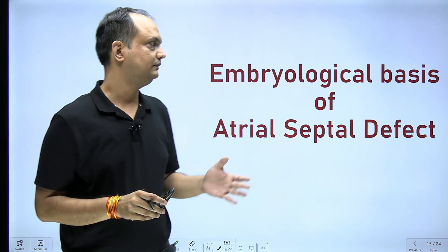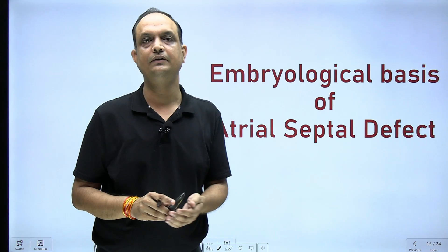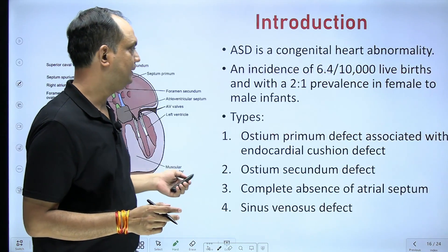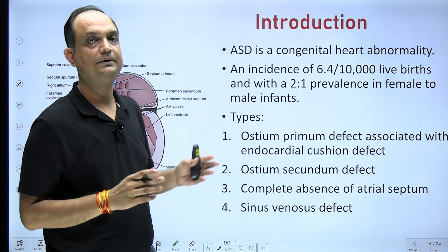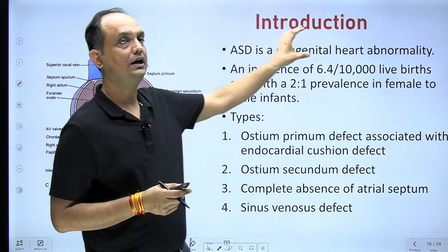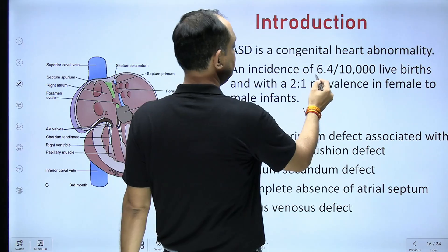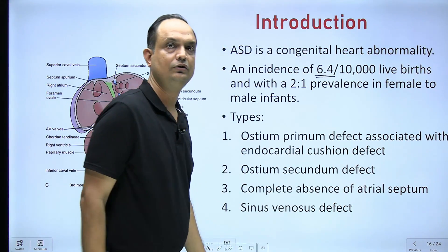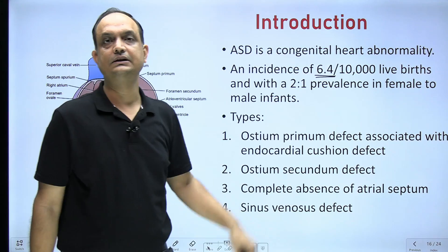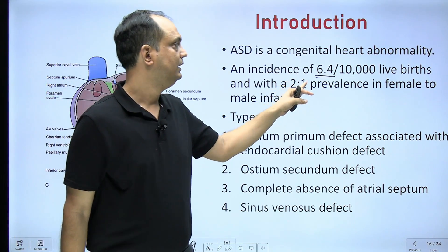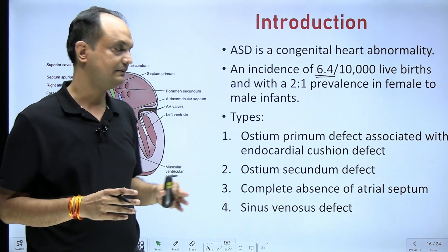Hello students. In this video we will discuss about the embryological basis of different kinds of atrial septal defects. Atrial septal defect is a kind of congenital heart anomaly. Its incidence is approximately 6 to 6.4 per 10,000 live births, and the sex ratio is 2 to 1 in female to male.